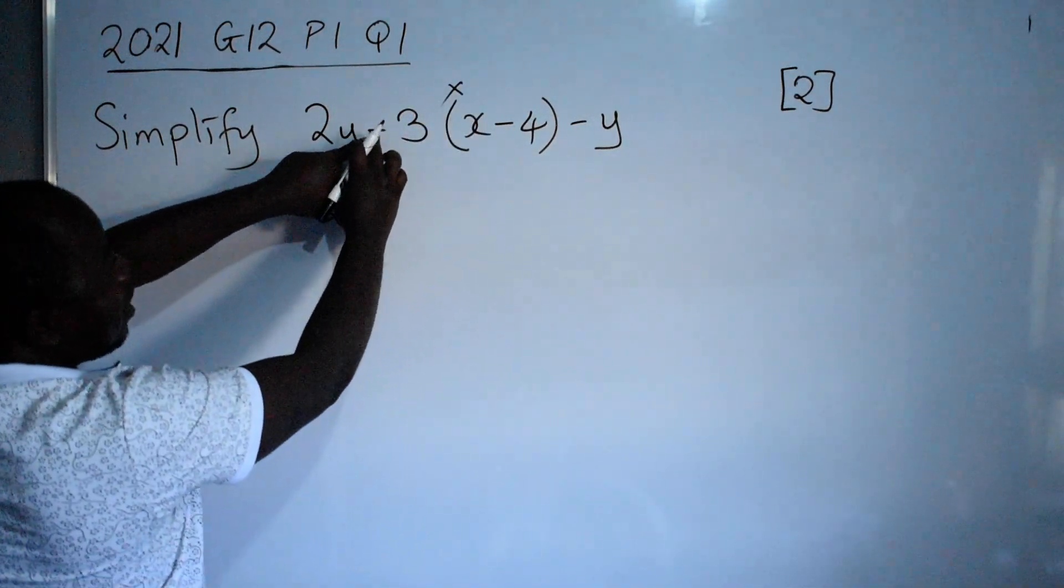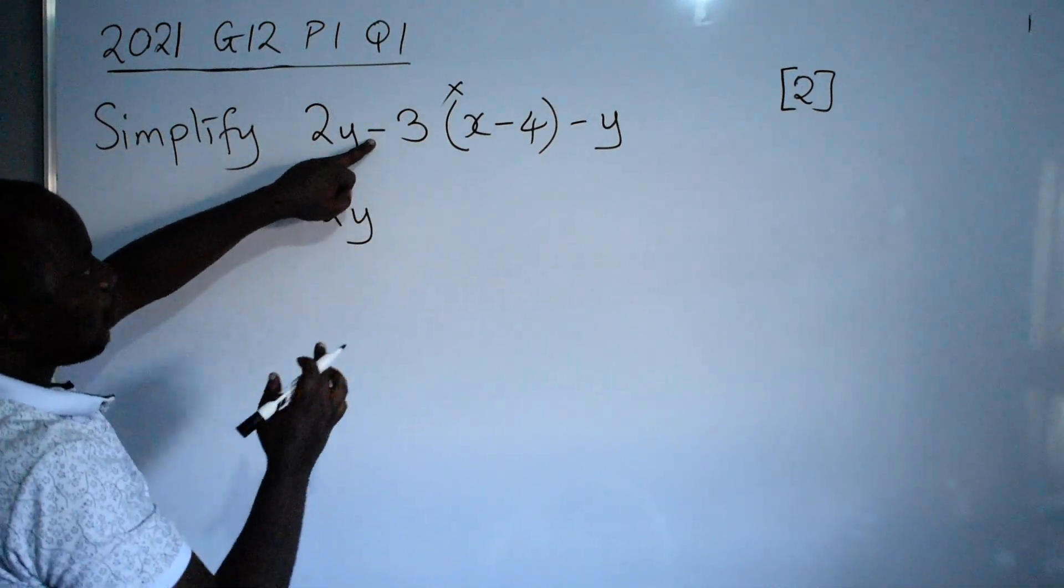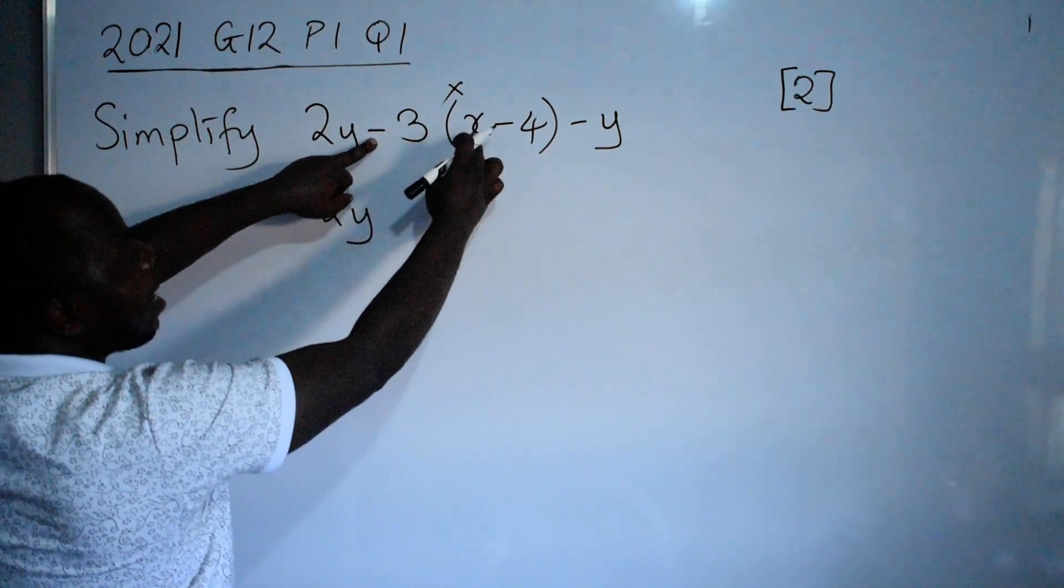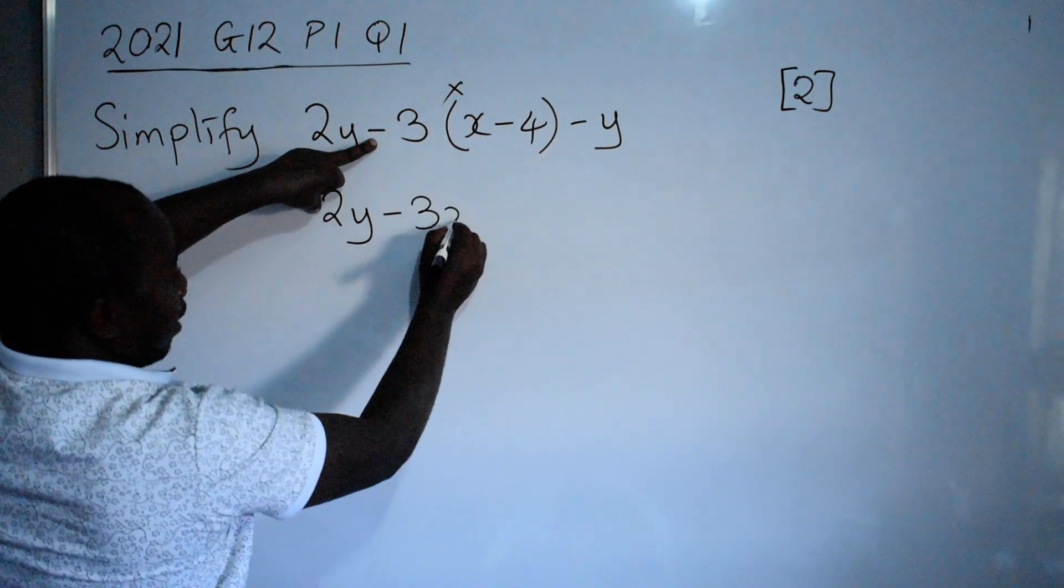So here the negative also must be considered when you are multiplying. So here is going to say negative 3 times x. This will be negative 3x.